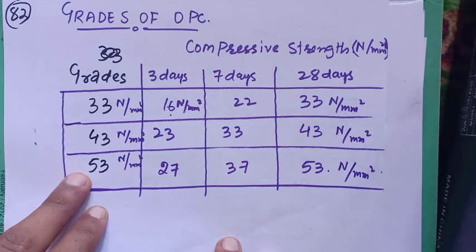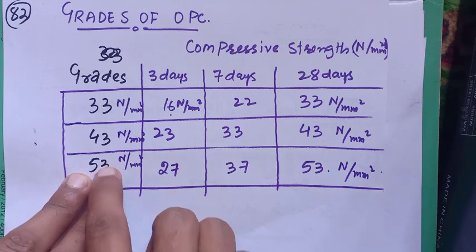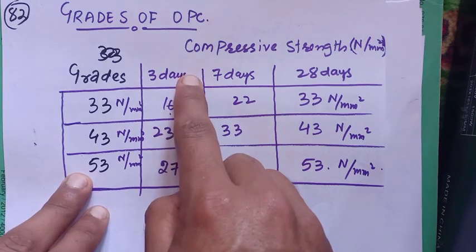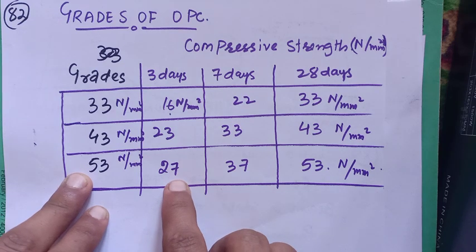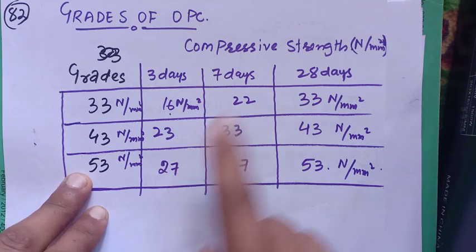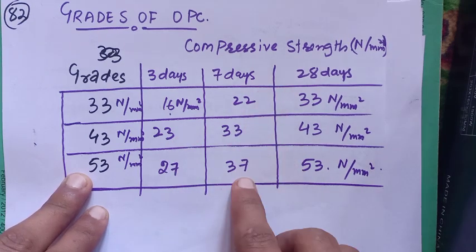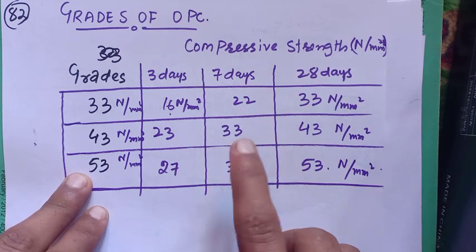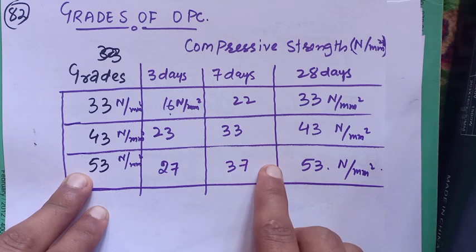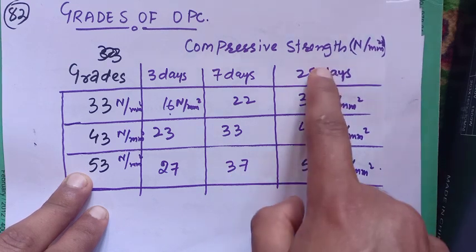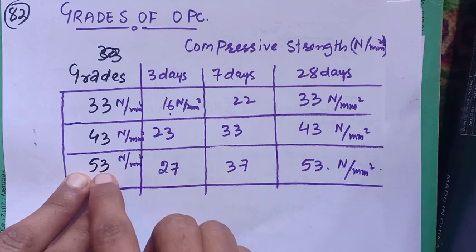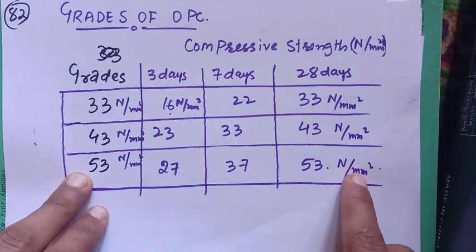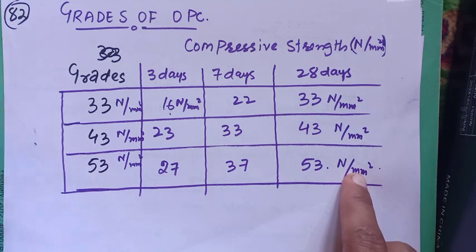Our next is 53 grade of cement. For 53 grade of cement, on the third day 27 Newton per mm² of strength must be attained, for the seventh day it must be 37 Newton per mm², and for the 28th day the complete strength of 53 Newton per mm² must be attained.